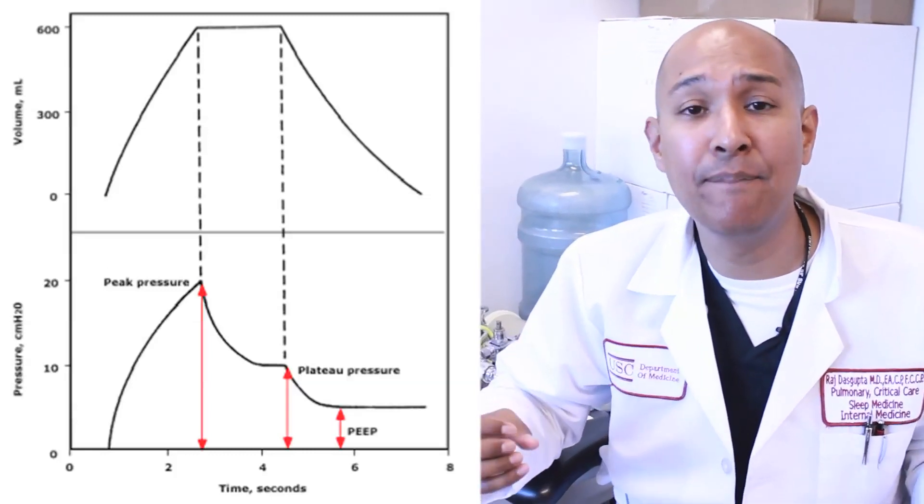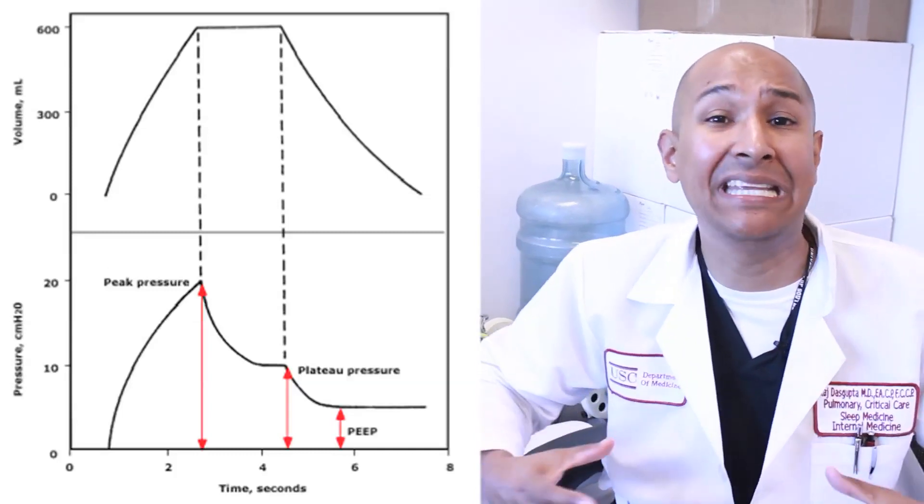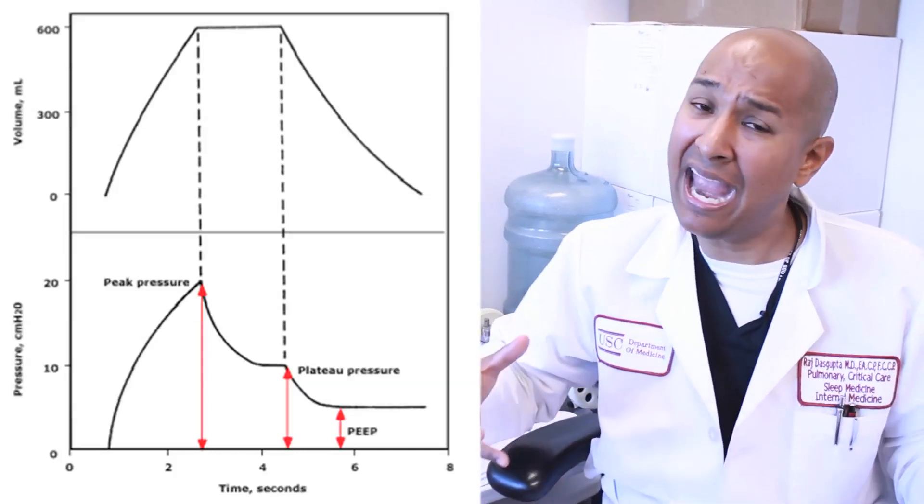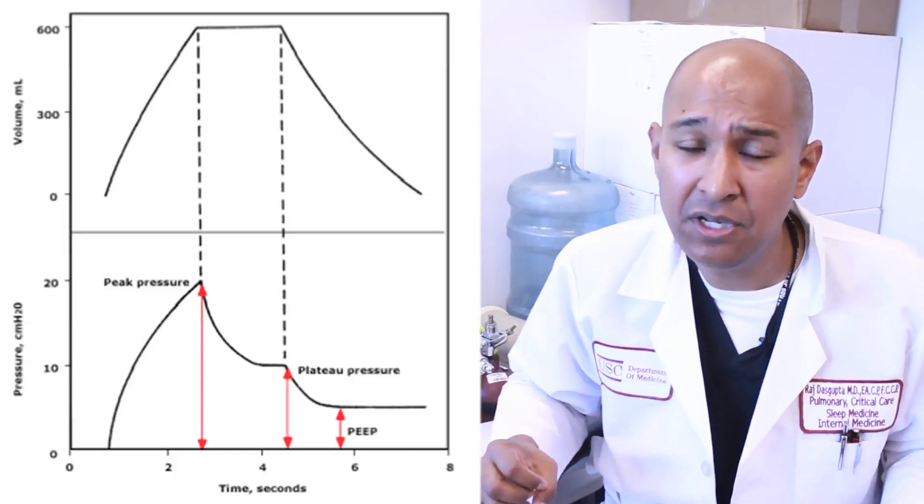A plateau pressure is a measurement of compliance of the entire lung, including the alveoli, the parenchyma, and the chest wall itself. So, to summarize,